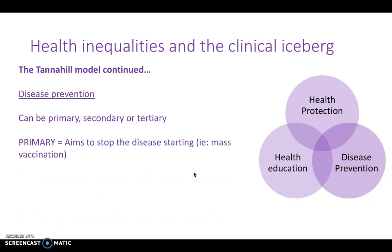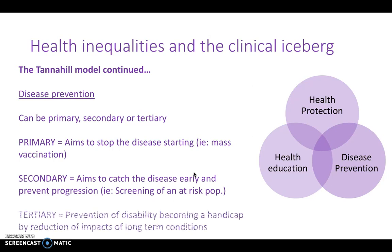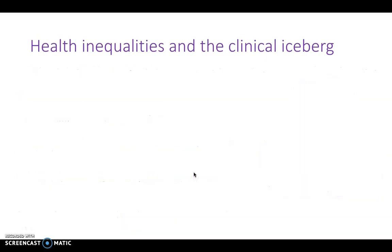Disease prevention can be primary, secondary, or tertiary. Primary aims to stop the disease starting — for example, mass vaccination. Secondary disease prevention aims to catch the disease early and prevent the progression of the disease — for example, screening of an at-risk population. Tertiary disease prevention is prevention of disability becoming a handicap by reducing the impacts of long-term conditions.